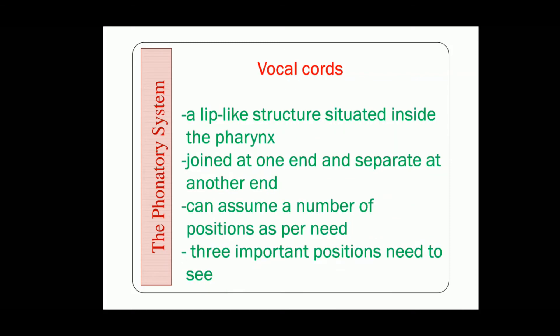The next organ is the vocal cords. What are vocal cords? Vocal cords are a lip-like structure situated inside the pharynx. Just as you know the lips, this organ is also like lips. It is joined at one end and separates at the other end, and because of its flexibility it can assume a number of positions as per the need.